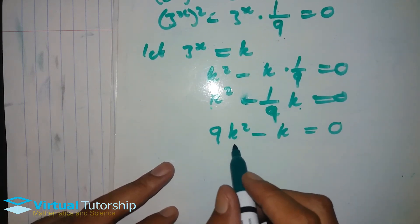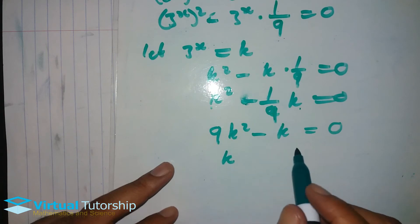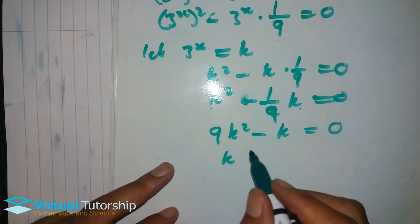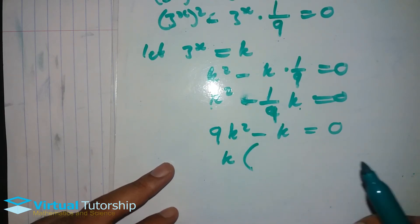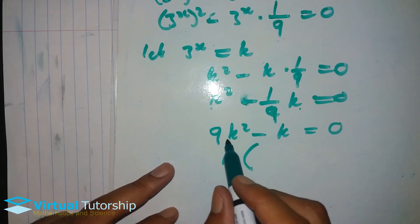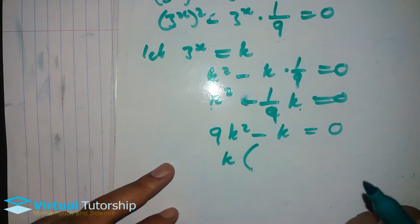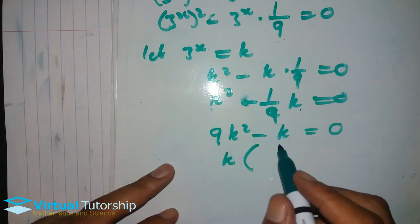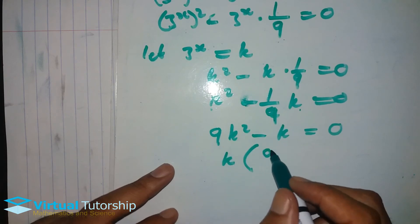In a fraction, within an equation — we multiply the LCM throughout. We multiply each of the left and right side with the LCM, which in this case is 9. So: 9k squared minus k, equal to zero.